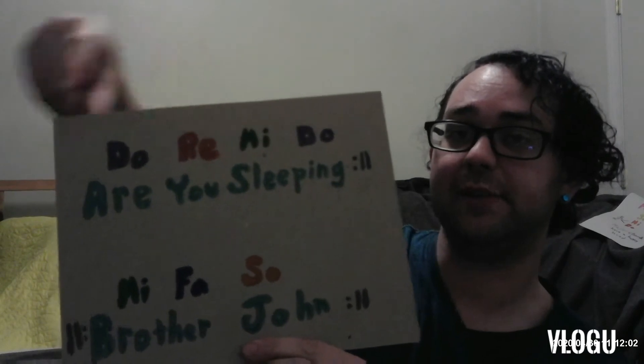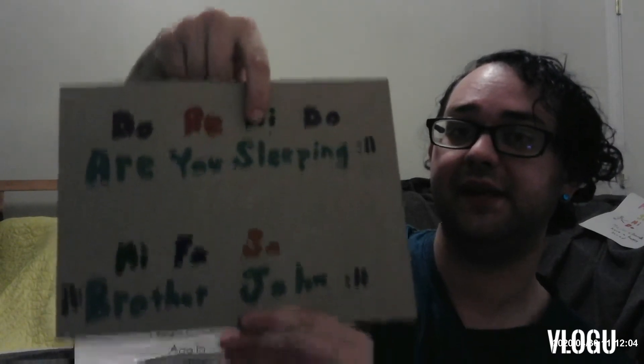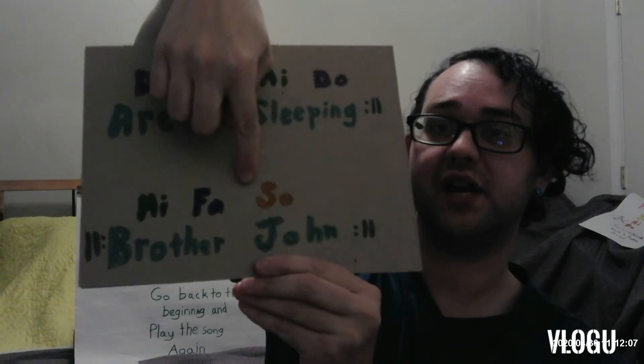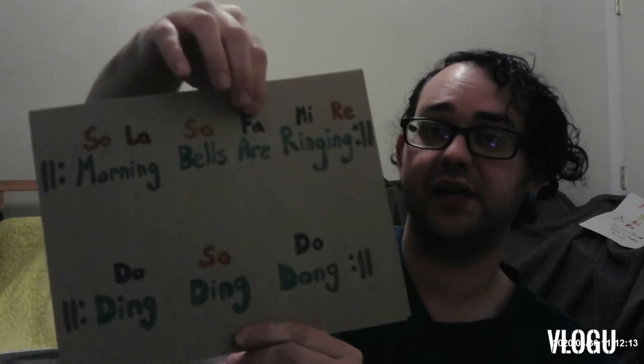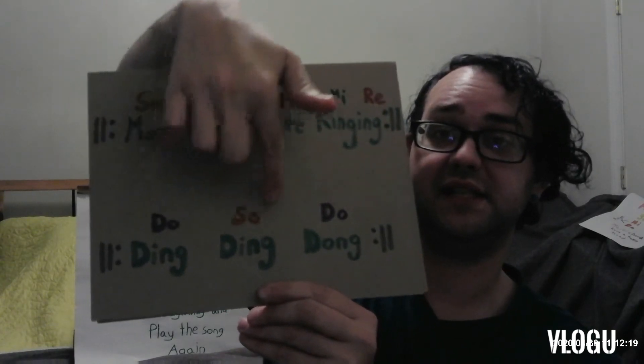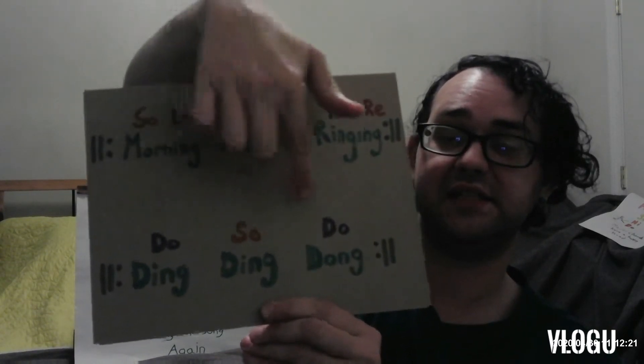There is repeat throughout that song. Are you sleeping? We go back — are you sleeping? And look: Brother John? Repeat. Brother John? We have morning bells are ringing. Repeat. Morning bells are ringing. And then down here: ding ding dong. Repeat. Ding ding dong. So you see, we use the repeat sign whenever we want you to go back and do a part of the song, or the whole song, all over again.